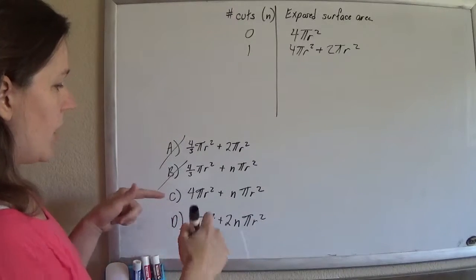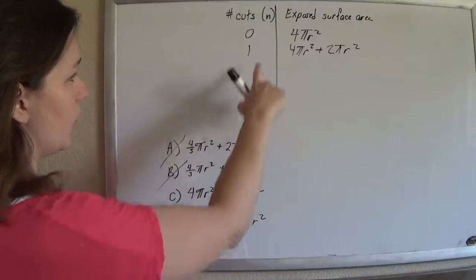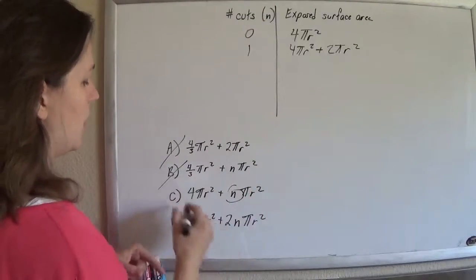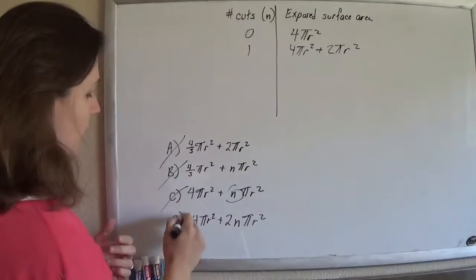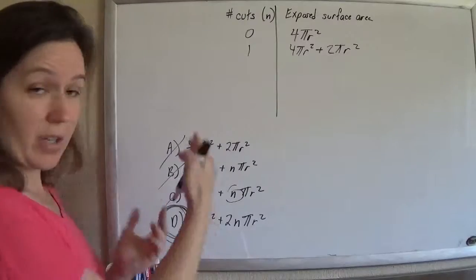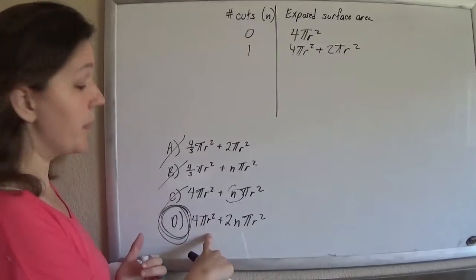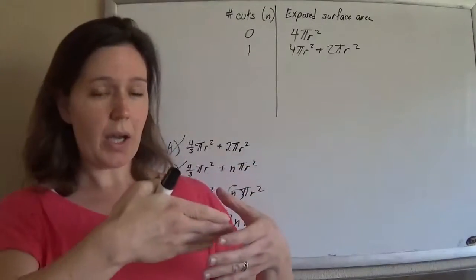Now this one, since we cut it once and that was supposed to be a 2, that's gone. So the only answer that makes any sense here, if one of these answers has to be correct, is D. You could keep going and know that every time you cut it,